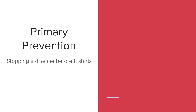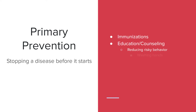Now we're going to go through the different types of prevention. Primary prevention — think of going to your primary care doctor every year for physicals — this is stopping a disease before it starts. The purpose is to prevent an illness before it starts. This is going to be things like immunizations, education and counseling such as reducing risky behavior, washing your hands, having safer sex. We can use condoms which will help reduce the risks, so it's called safer sex. Also proper food handling.